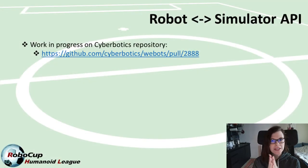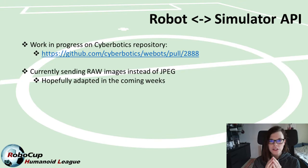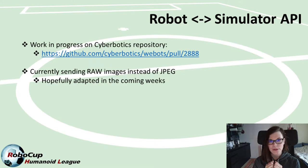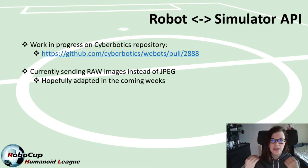If you are already curious, you can have a look at the pull request. One thing you will notice is that in the current version the robot model is still sending raw images instead of JPEG as we had agreed on. This is hopefully going to change in the next couple of weeks. However, at the moment we need to focus on the auto referee implementation, so for at least a while you will have to deal with the raw images being sent by the robots.